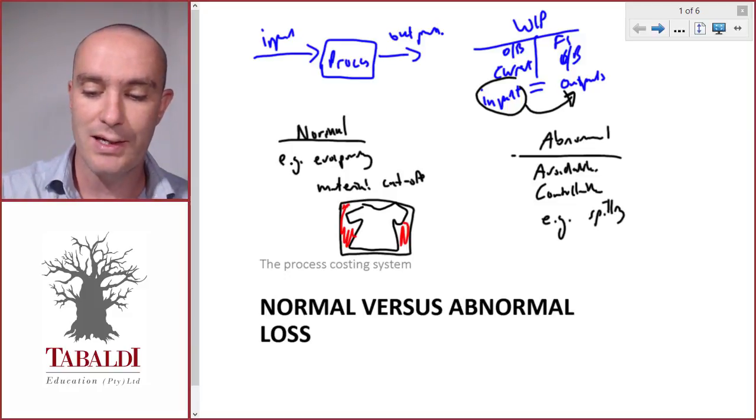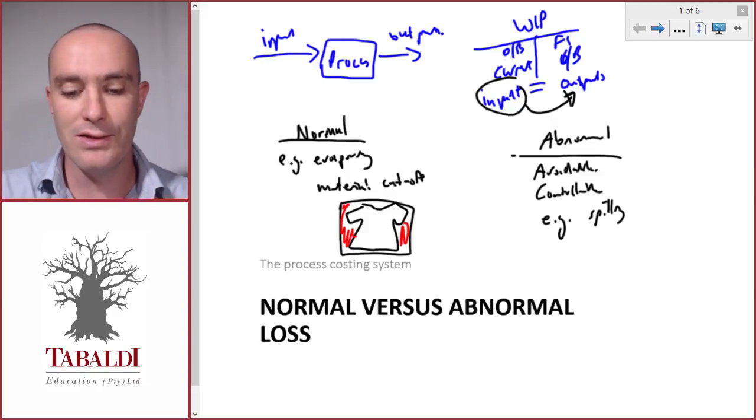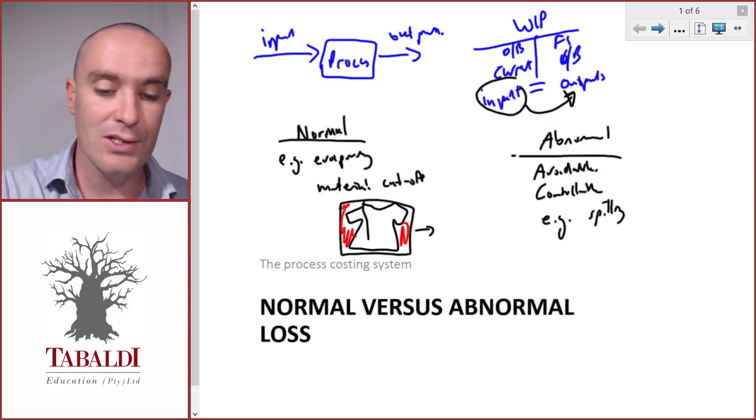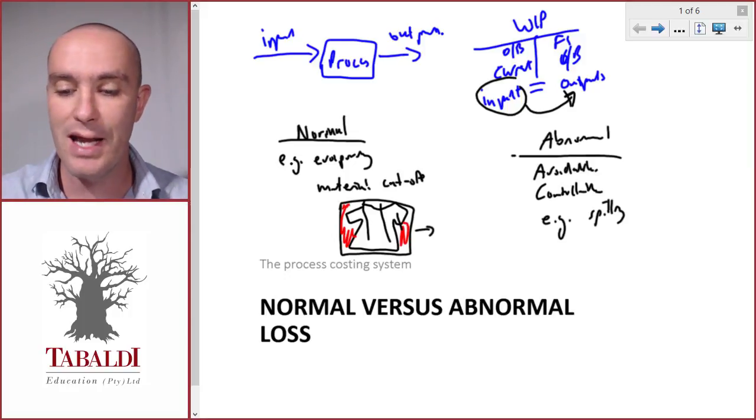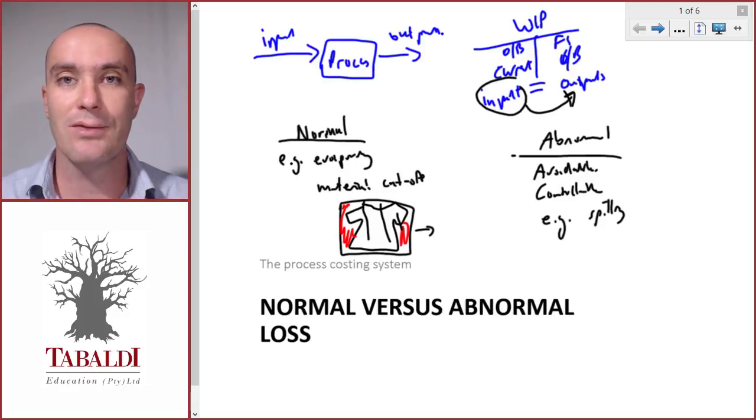Abnormal losses might also be like inferior quality. In the case of the dress, what if we purchase material and there's tears all through the material and we can't use it and we have to throw it away? Now that's an abnormal loss. It shouldn't be happening in the normal manufacturing process.